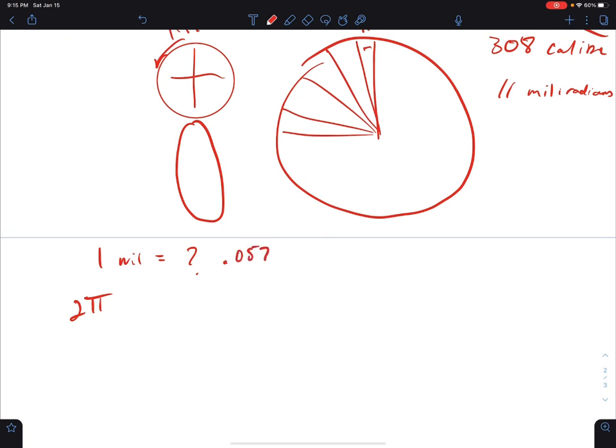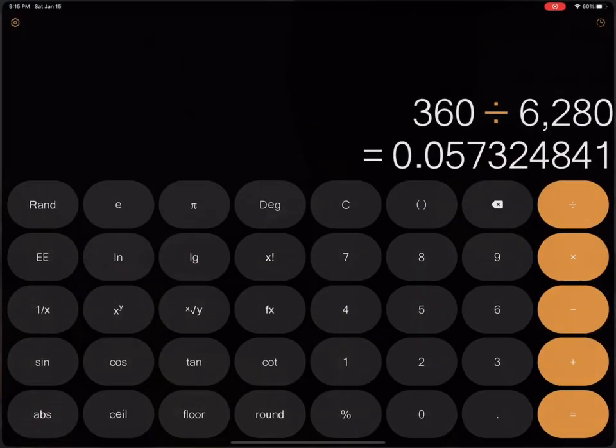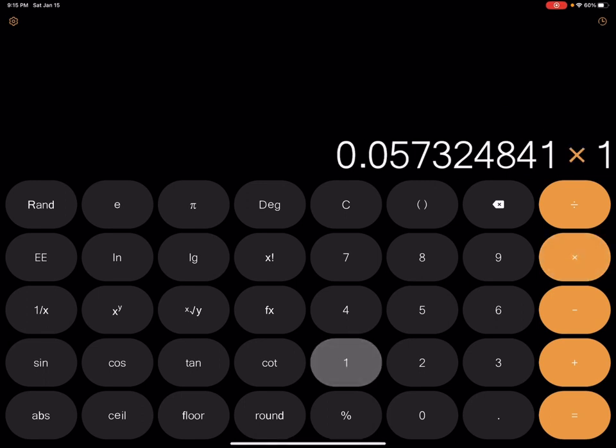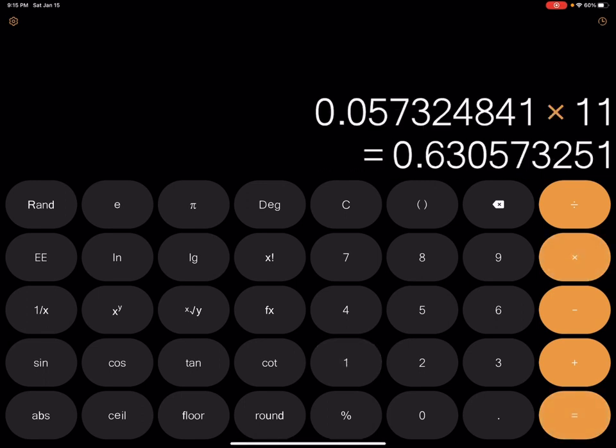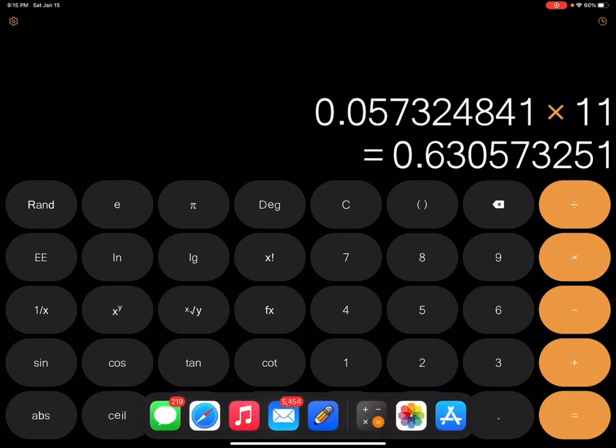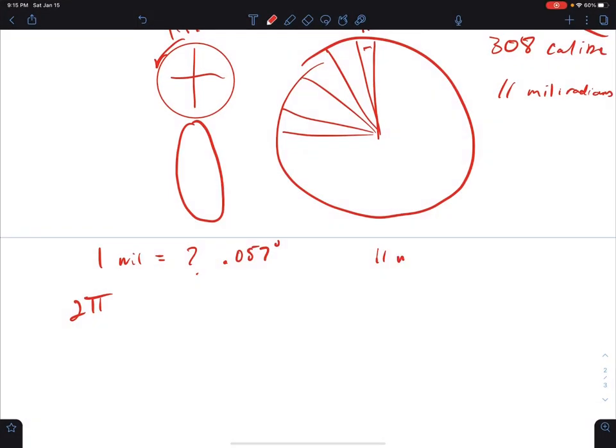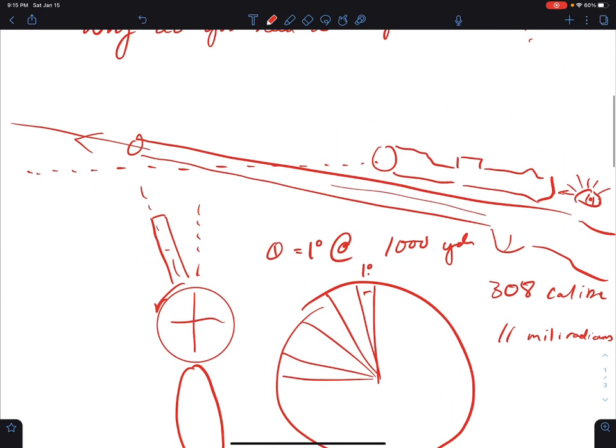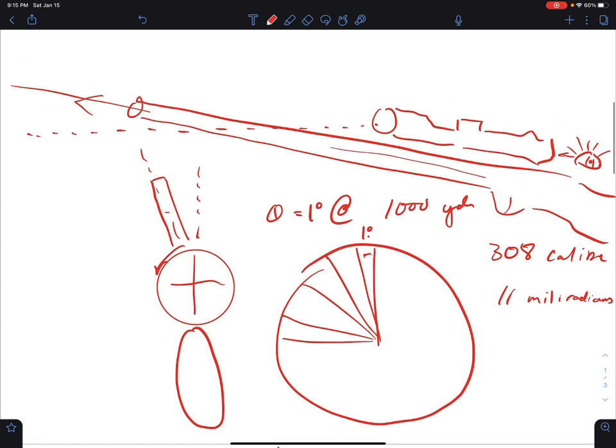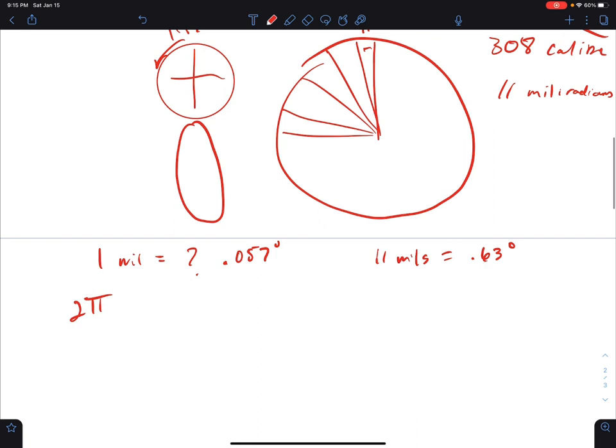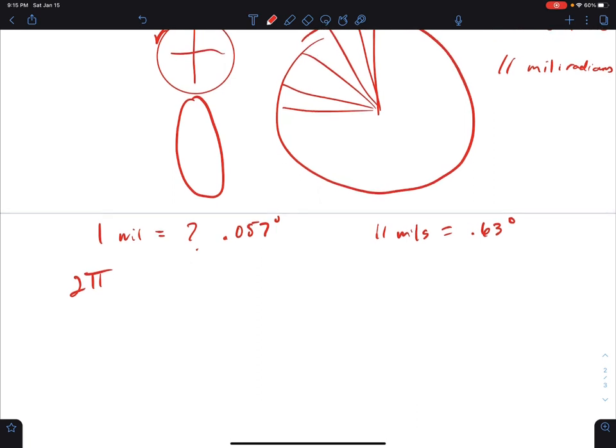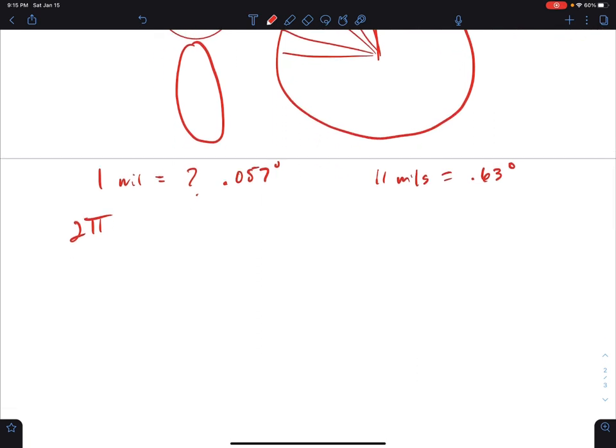So one mil equals 0.057 degrees, and I need to multiply that times 11. Times 11, 0.63 degrees. So 11 mils equals 0.63 degrees. So that's this angle right here—is 0.63 degrees that my barrel is elevated 0.63 degrees in order to hit a target at 11. Now I need to figure out, now I'm going to draw us another triangle here.